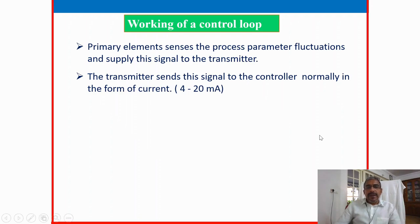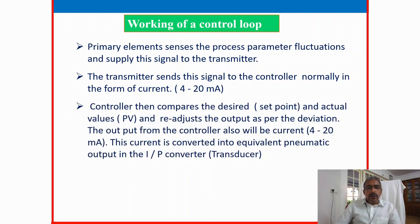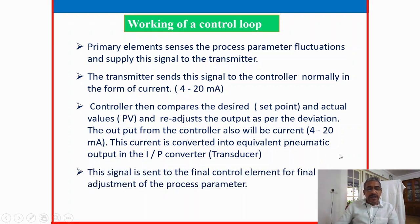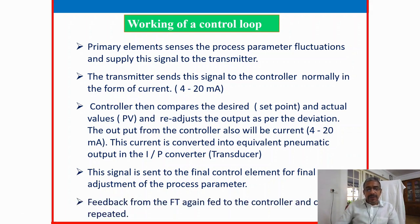Working of a control loop: the primary element senses the process parameter fluctuations and supplies the signal to the transmitter. The transmitter sends the signal to the controller, normally in the form of current 4 to 20 milliamps. The controller compares the desired set point and actual value and readjusts the output as per deviation. The output from the controller — also 4 to 20 milliamps — is converted to equivalent pneumatic output using an I/P converter (current to pneumatic converter or transducer). The signal is sent to the final control element for final adjustment. Feedback from the flow transmitter is again fed to the controller and the cycle repeats.